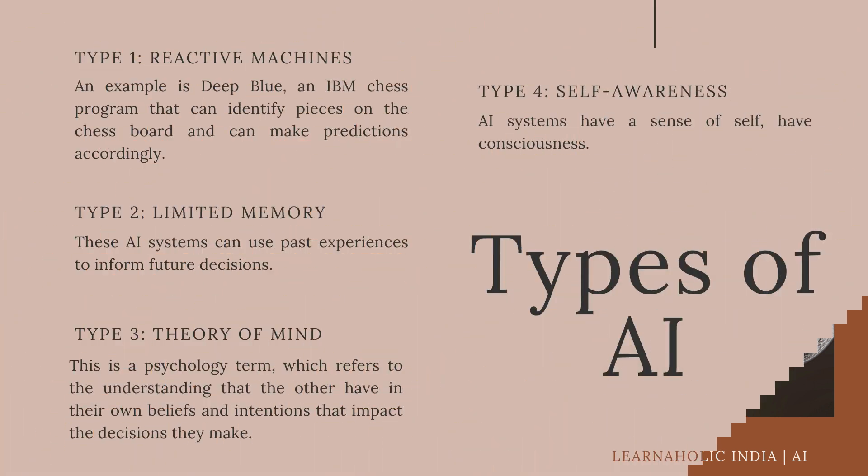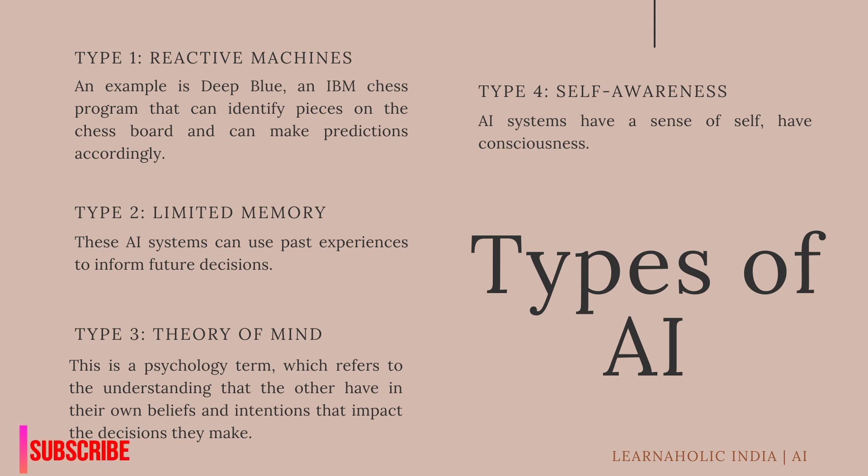Artificial intelligence is categorized into four types. Type 1 is Reactive Machines. An example is Deep Blue, IBM's chess program that can identify pieces on the chessboard and make predictions accordingly. Its major limitation is that it has no memory and cannot use past experiences to inform future ones. It analyzes possible moves of its own and its opponent. Deep Blue and AlphaGo were designed for narrow purposes and cannot easily be applied to any other situation.